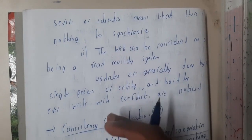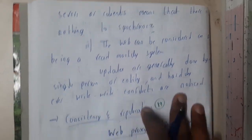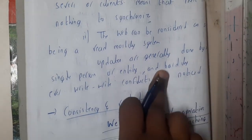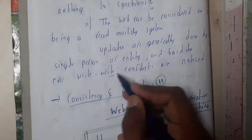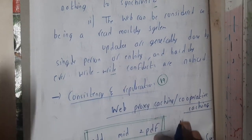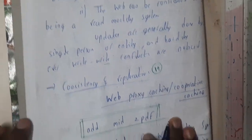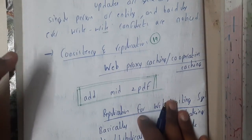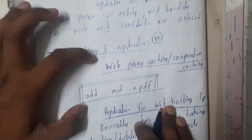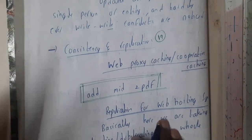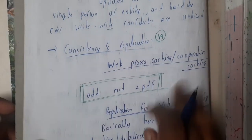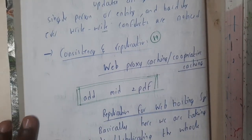You can only read them; you cannot do any kind of manipulations or updates. Updates are done mostly by a single person, entity, or group of persons, and we will hardly face any conflicts. In the next lecture, we will be discussing consistency and replication, including web proxies and proxy caching, which are really important.